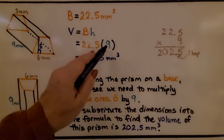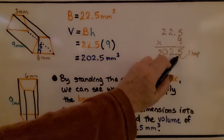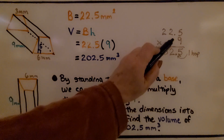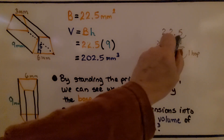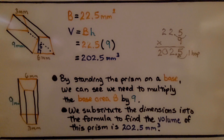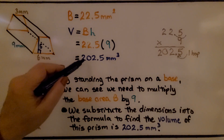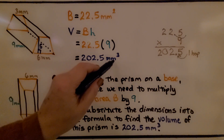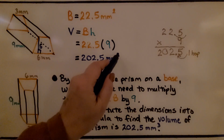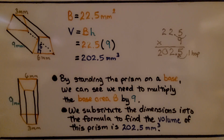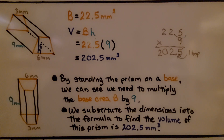22.5 times nine is 202.5. Keep in mind, when multiplying with decimals, if you have one decimal place in the equation, there will be one decimal place in the product. So we get 202.5 millimeters cubed. Because we're finding volume, the unit is cubed. We substitute the dimensions into the formula to find the volume of this prism is 202.5 millimeters cubed.